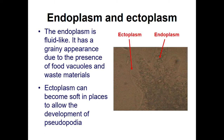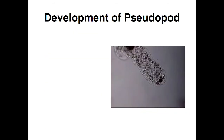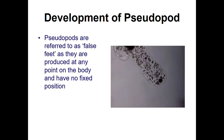The endoplasm consists of the food vacuoles and waste materials. The ectoplasm is the outer region where the pseudopodia are getting developed. This is called a pseudopodium — a false leg or false feet, whatever you call it — pseudopodia.